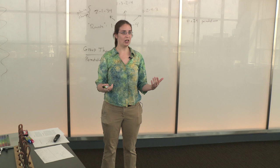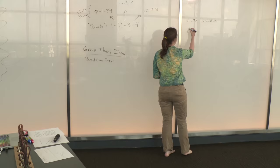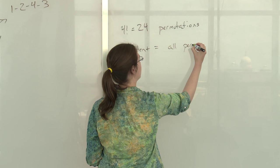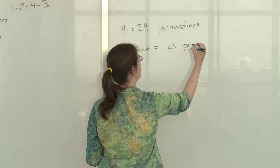So there are two terms that we use for this in change ringing. We say an extent is a performance which includes all permutations, and we say a performance is true if it has no repeats.